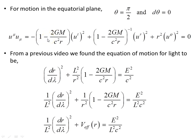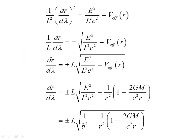From previous videos we found the two Killing vectors: one giving an expression for energy, another for angular momentum L. This simplified the equation of motion down to a single expression. Multiplying through by 1/L² we found the effective potential. Rearranging and taking the square root of both sides (plus or minus), we had ±L times this object, where b was the impact parameter — in light units it was Lc/E, or b. All of this is in the previous video.